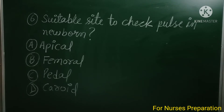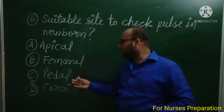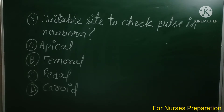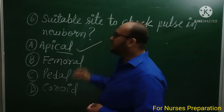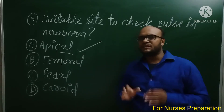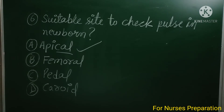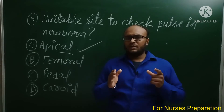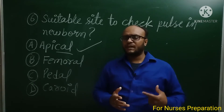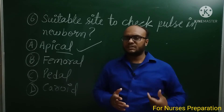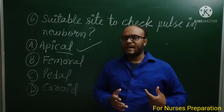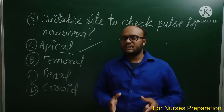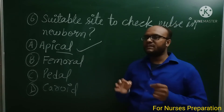Question 6: The suitable site to check pulse in a newborn baby. Option A: Apical, Option B: Femoral, Option C: Pedal, Option D: Carotid. The correct answer is Option A, Apical. The apical site is the most suitable site to assess the pulse in a newborn baby. To assess the apical pulse, you auscultate at the apex of the heart in the chest region of the baby. Femoral, pedal, and carotid pulses are not as suitable as the apical site for pulse assessment in newborns. You can take a screenshot for your revision.